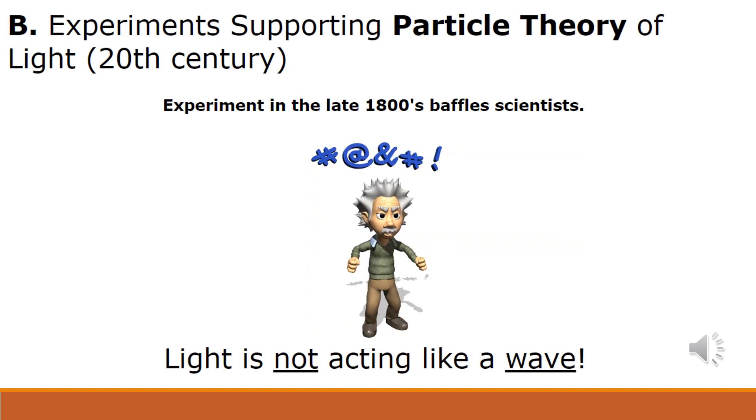In 1905, an unknown 26-year-old physicist named Albert Einstein explained the photoelectric effect by stating that light did in fact behave like a wave, but it also had the ability to act like a particle. Einstein won his only Nobel Prize in physics for this discovery.